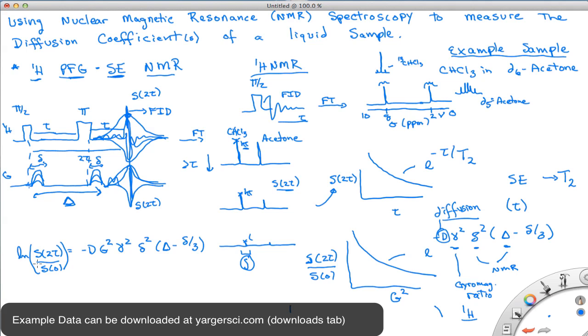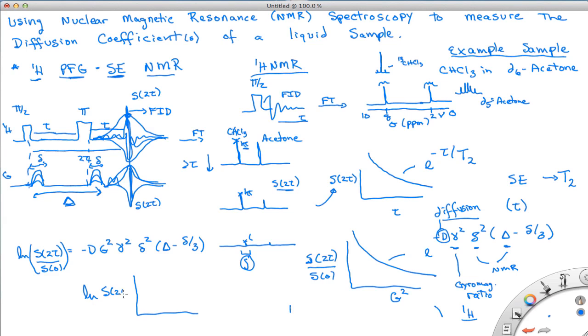Now usually we take the LN of S0 over to this side, that way when we plot LN of S2, which is again our height or our integrated signal versus the gradient squared, it'll be linear.